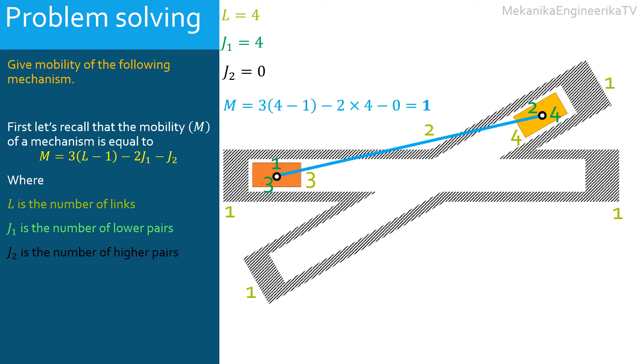Finally, the mobility M = 3(4 - 1) - 2(4) - 0 = 1. Hence, the mobility is equal to 1, meaning the mechanism has 1 degree of freedom.